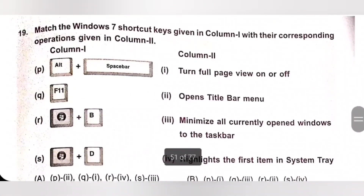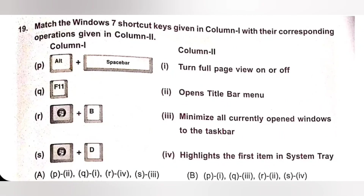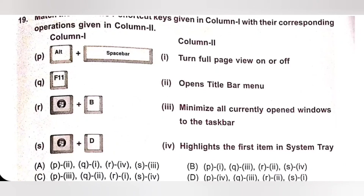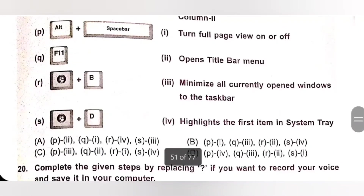Nineteenth: Match the Windows shortcut keys in Column 1 with their corresponding operations in Column 2. Alt plus Space Bar: opens the title bar menu. F11: turns full page view on or off. Windows plus B: highlights the first item in the system tray. Windows plus D: minimizes all currently opened windows to the taskbar. The correct matching is P2, Q1, R4, S3. Option A is the correct answer.